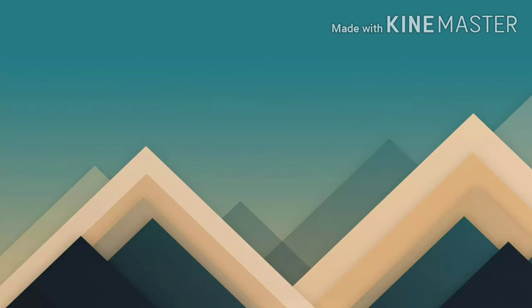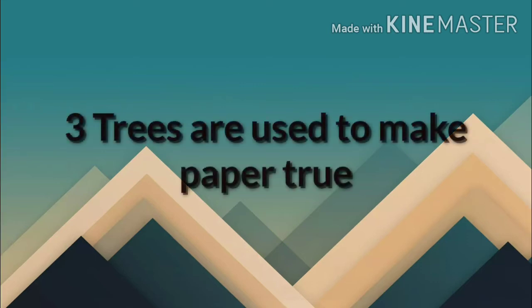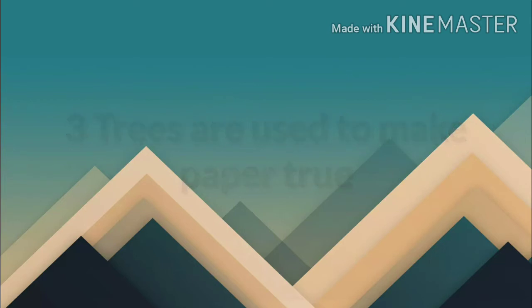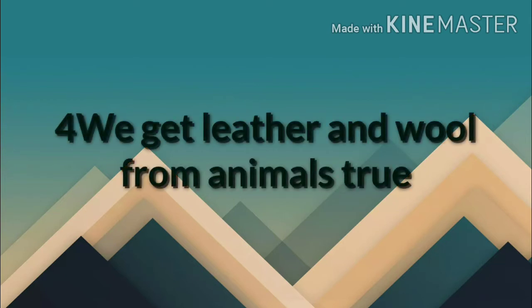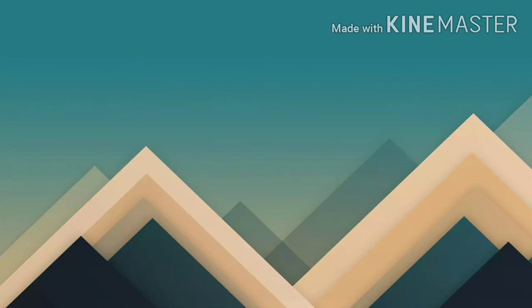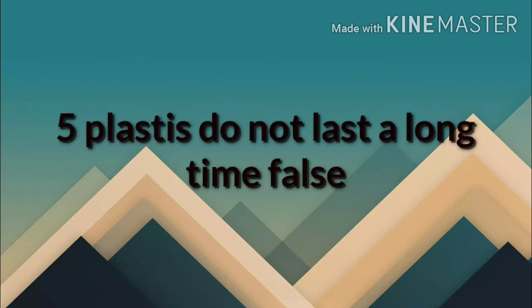Third: Trees are used to make paper. True — we get wood from bamboo trees and pine trees, from which we make paper. Fourth: We get leather and wool from animals. Yes, that is true — we get leather and wool from animals. Fifth: Plastic does not last a long time. False — plastic lasts a long time.